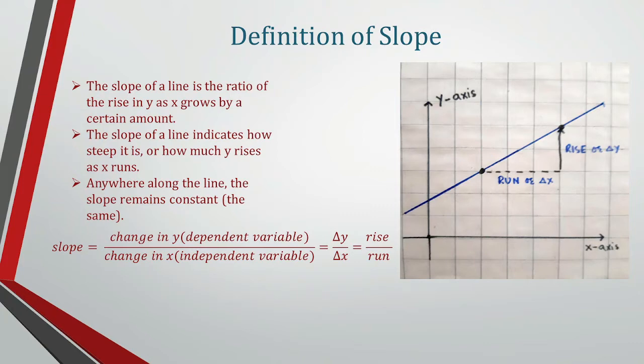Slope is always constant anywhere on the line, at any point. From the formula, slope equals change in y (the dependent variable) over change in x (the independent variable), or rise over run.